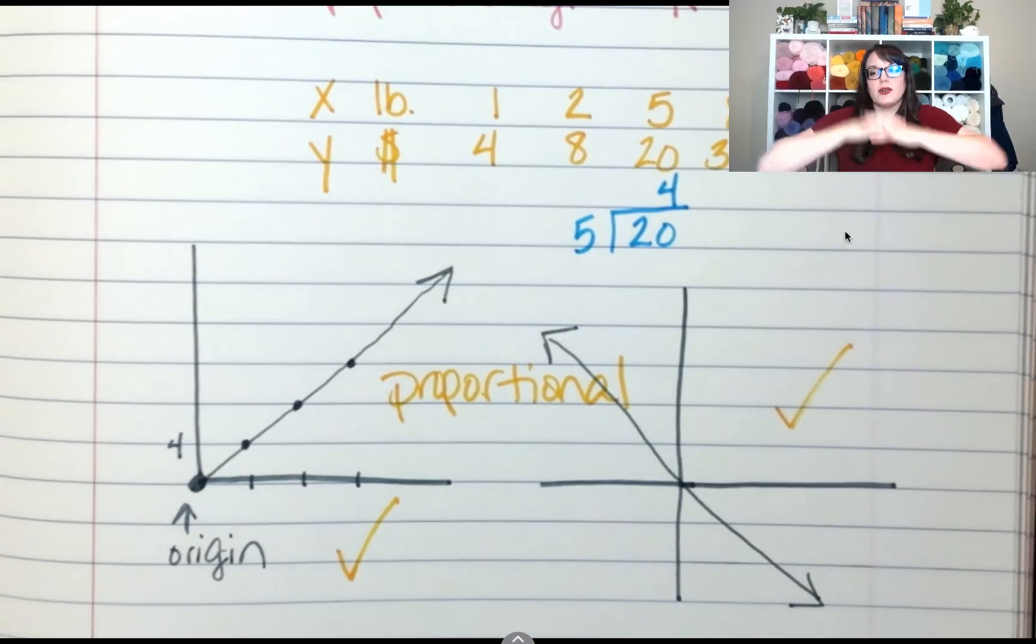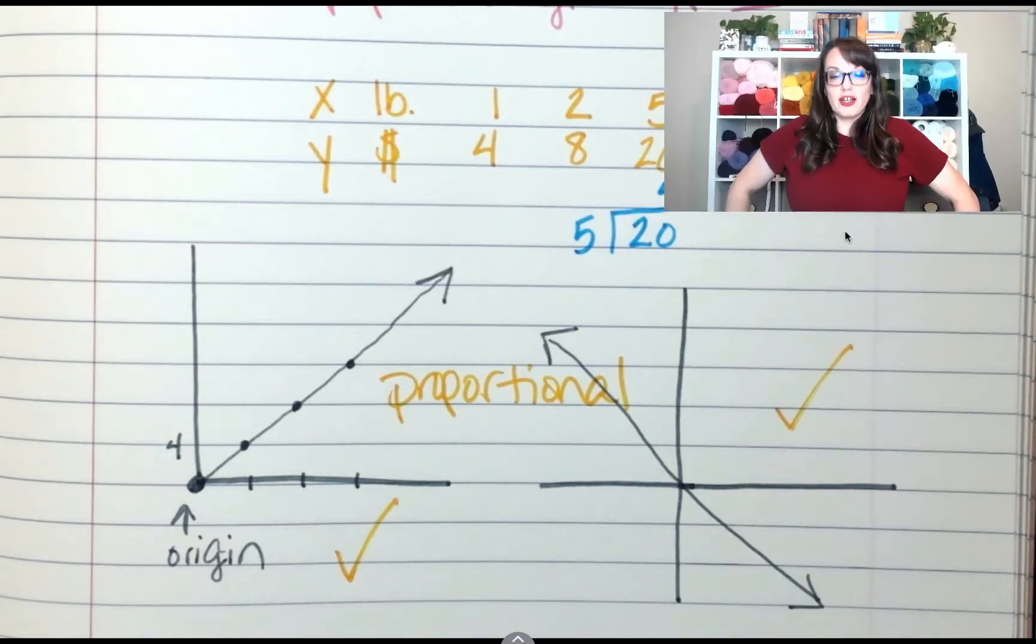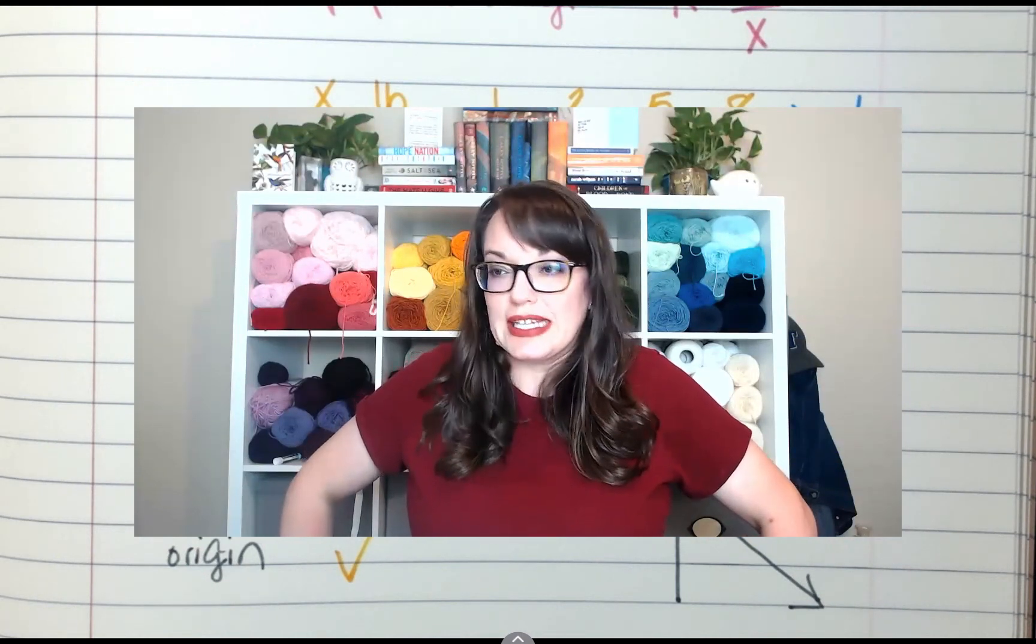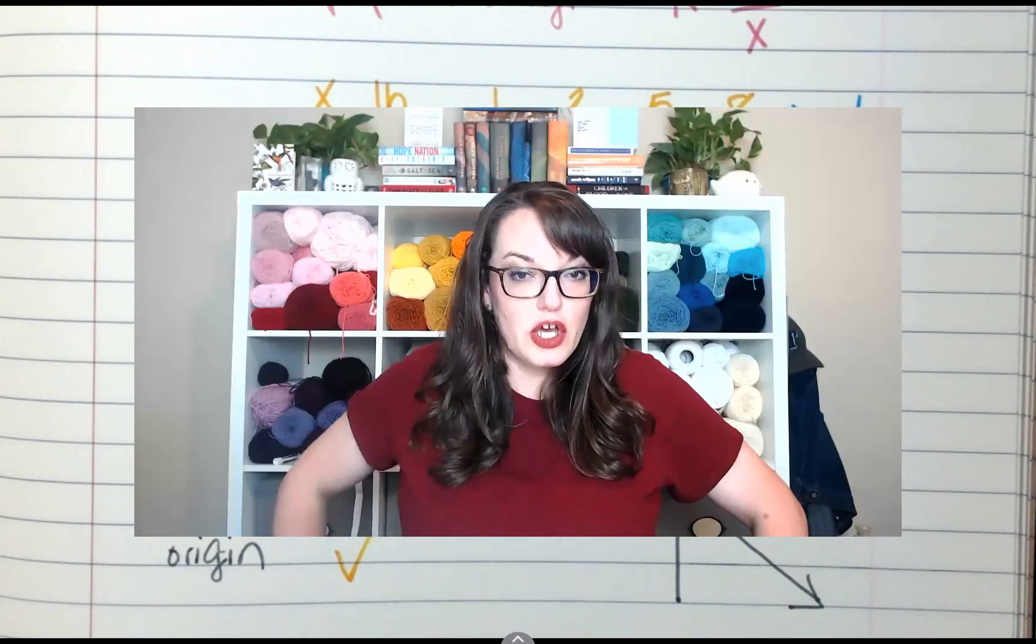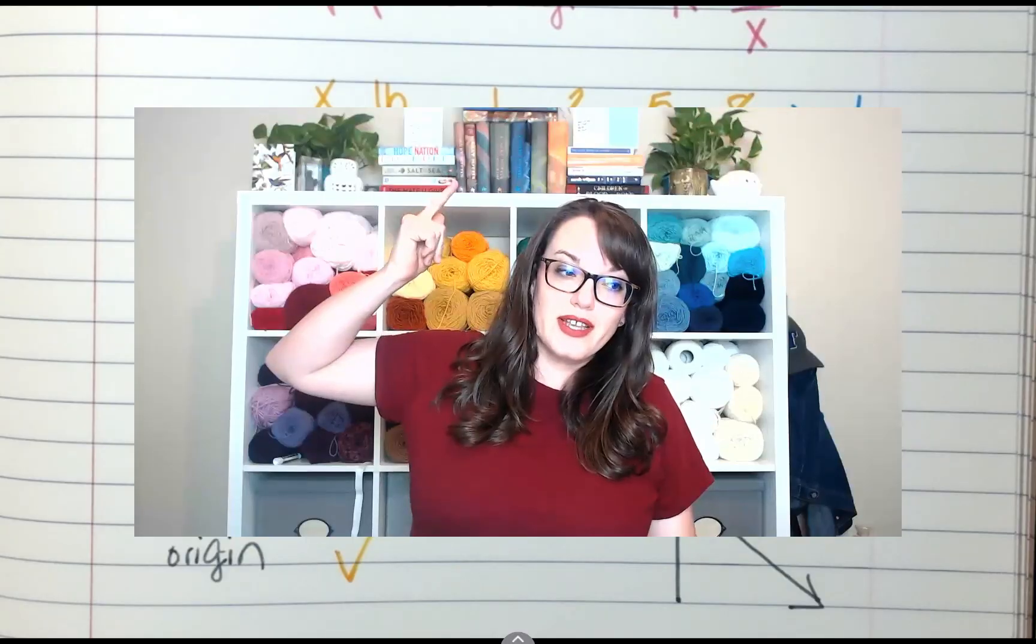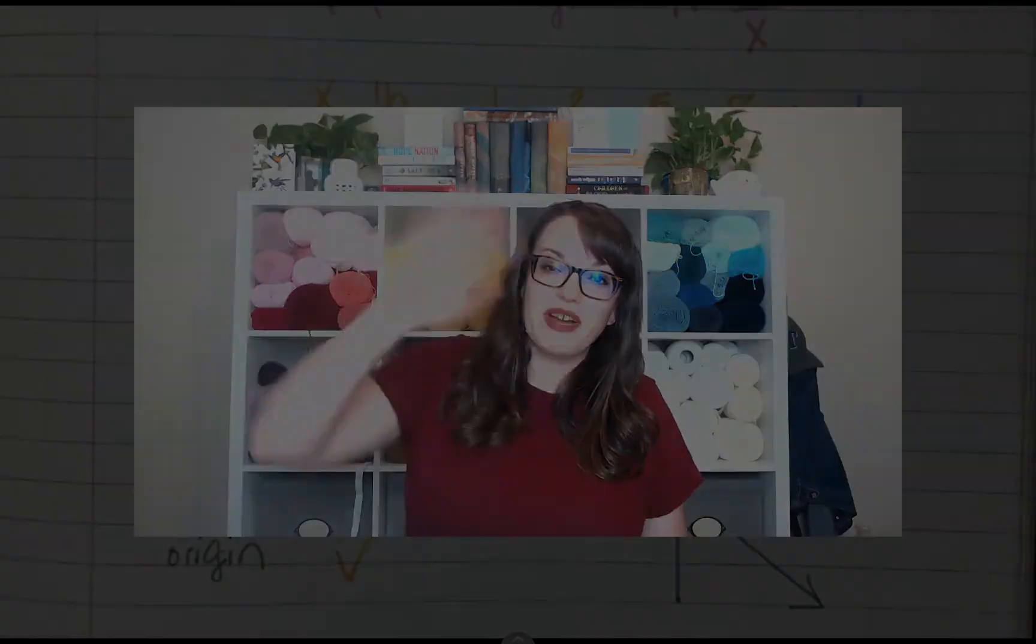All right so again constant rate of change is just another way to think about unit rate. Each thing costs or is the same amount over and over. So that brings us to the end of this lesson. I will see you guys next time. Don't forget to like and subscribe. Ring the bell to get notifications. See you later. Bye everybody.